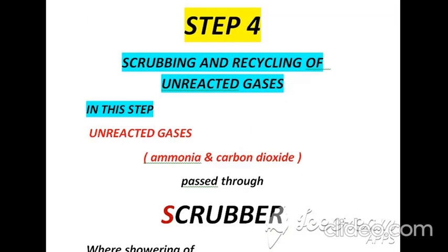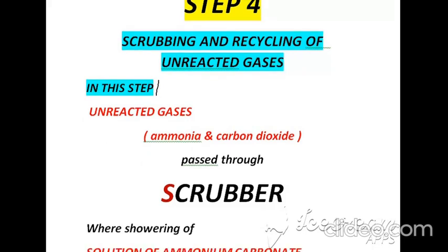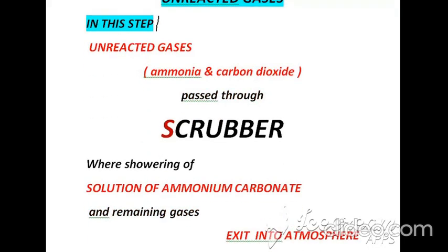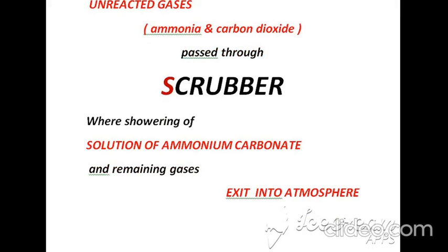According to step four, which is scrubbing and recycling of unreacted gases, the unreacted gases ammonia and carbon dioxide are passed through a scrubber where showering of ammonium carbonate solution occurs, and remaining gases exit into the atmosphere.